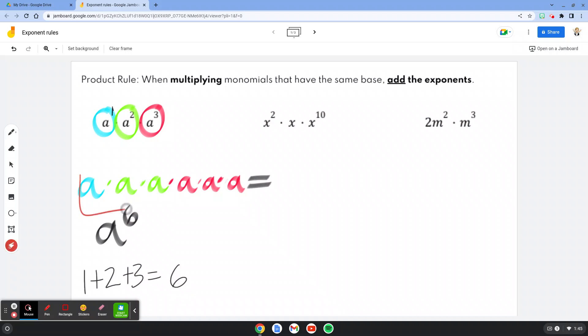So instead of having to do all of this every time, we can just add the sum of our exponents together as long as they have the same base and find what the new exponent is going to be. Now let's look at this one here.